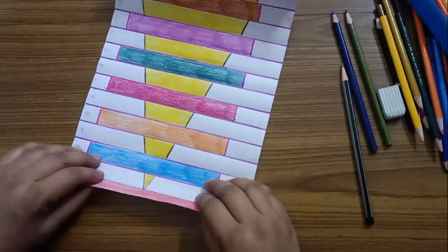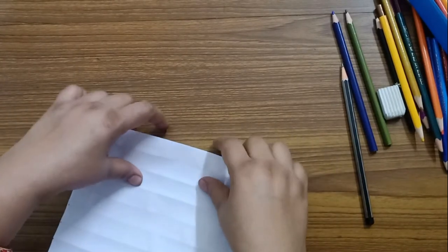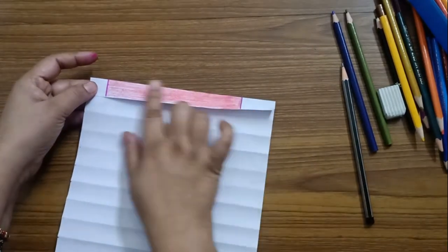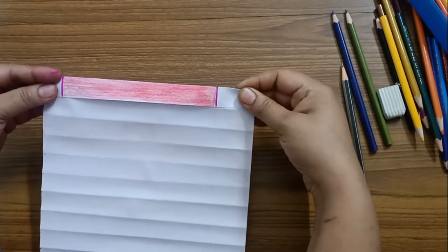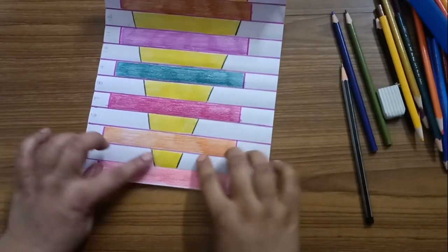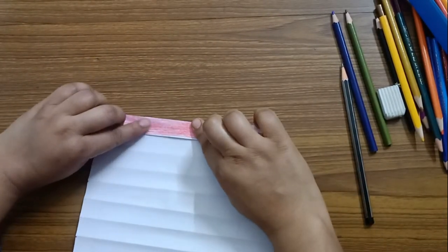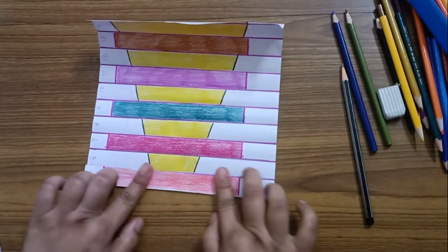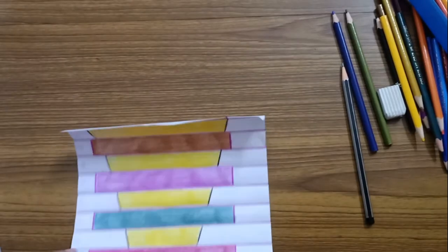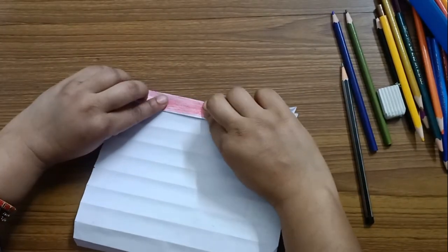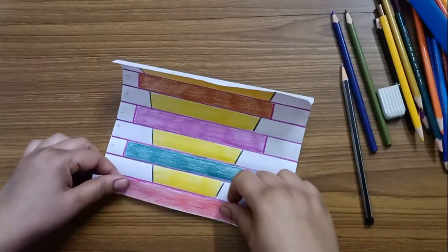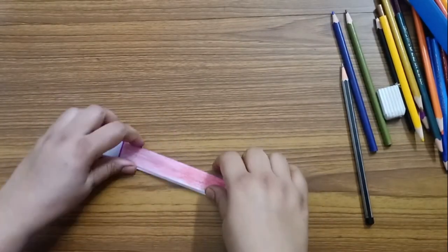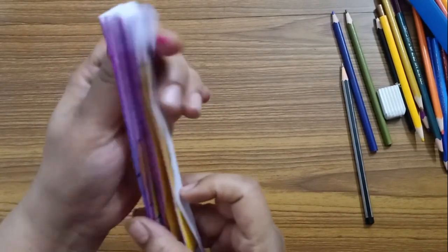Now as I told you, now we are going to fold it like an accordion style. First, we have to fold it out and then in. Like this. We already have a fold, so we just have to fold it in an accordion style. Like this. We have a shape like this.